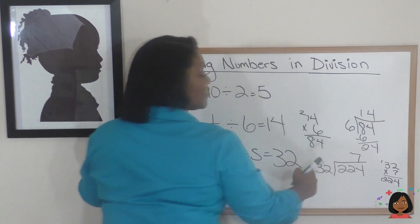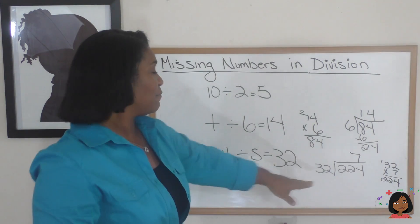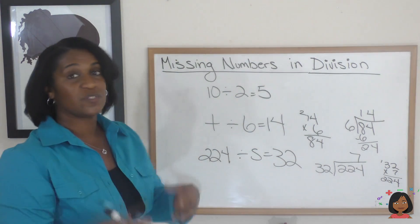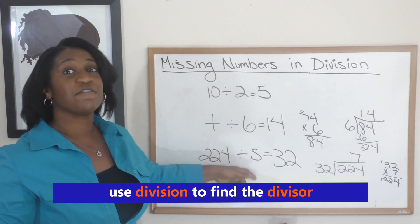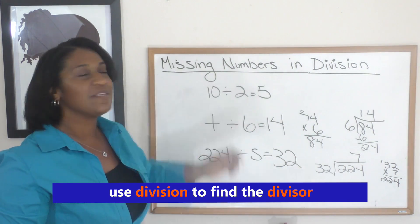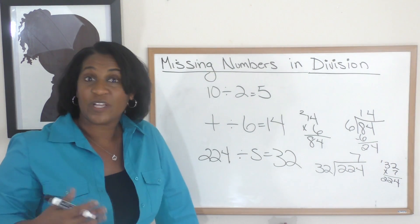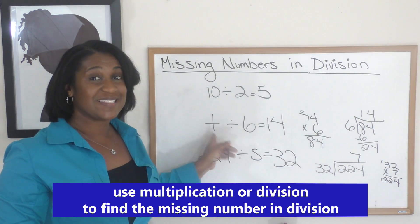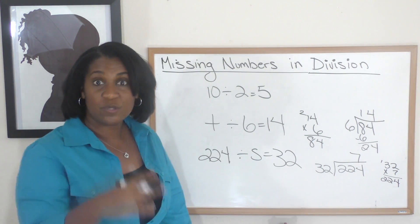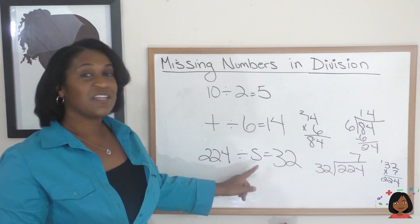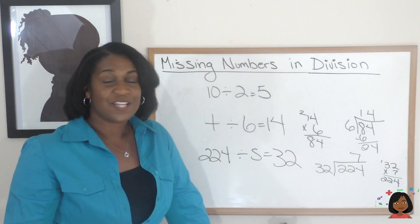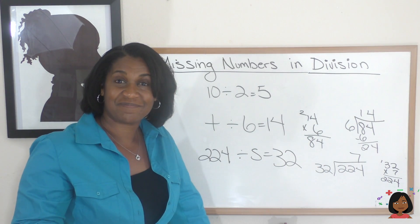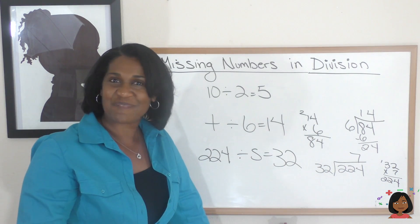So 7 times 32 will give me 224. So this time we used division to find the divisor. So when we have a missing number in division, we can either use multiplication if that missing number is the dividend, or we can use division if that missing number is the divisor. Just depends on what you're looking for, and that's it. Pretty simple. See you soon. Bye.